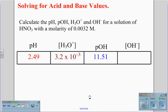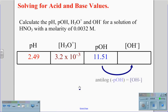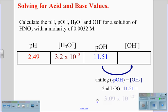We now can convert our pOH value to our hydroxide concentration. We do this using the anti-log of the negative pOH: second log of negative 11.51 gives a value of 3.09 times 10 to the negative 12th.